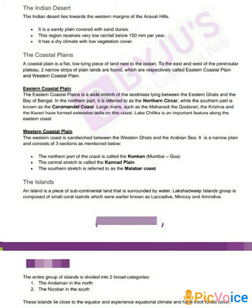The second section is the central stretch, known as the Kannad plain, which covers the Karnataka region. The third, southern stretch is referred to as the Malabar coast, near Kerala. So Konkan is near Mumbai to Goa in Maharashtra, Kannad plain is in Karnataka, and Malabar is in the south. These coastal plains are very rich in flora and fauna.